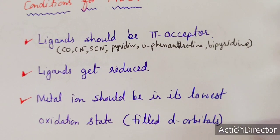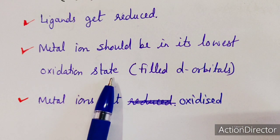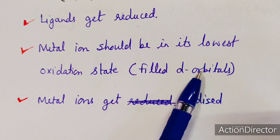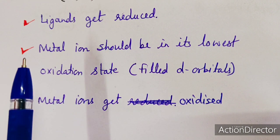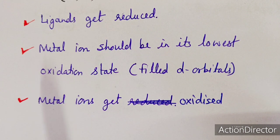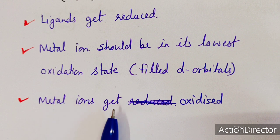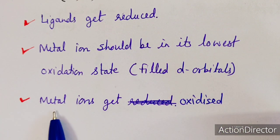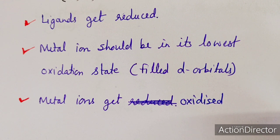The metal should be in its lowest oxidation state, meaning it should have filled d orbitals rich in electrons, while the ligand has empty antibonding molecular orbitals, making the transition from metal to ligand easy. The metal ions get oxidized while the ligand gets reduced simultaneously. This makes charge transfer spectra a kind of redox spectra — one species gets oxidized and the other gets reduced.